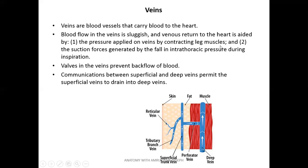The first factor is the pressure applied on veins by contracting leg muscles. The soleus muscle, called the peripheral heart, has many veins inside. When it contracts during walking, the veins inside are compressed and blood is pushed upward. The blood cannot return downward when the muscle relaxes because of valves present in the veins — unlike arteries. These valves prevent the backward movement of blood toward the lower aspect.